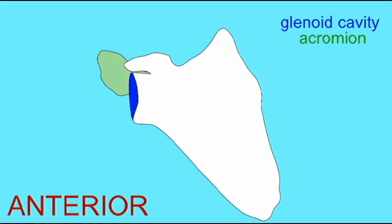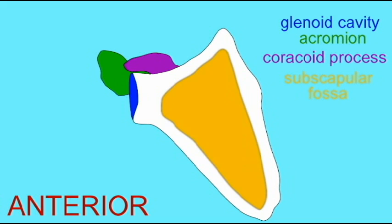Notice that on the posterior side, there are two depressions which have the root spine in them, supraspinous fossa and infraspinous fossa. There is no spine on the anterior surface of the scapula, and therefore its fossa is named the subscapular fossa.